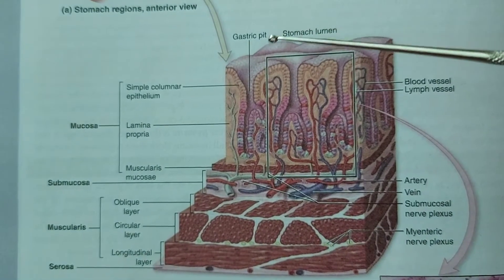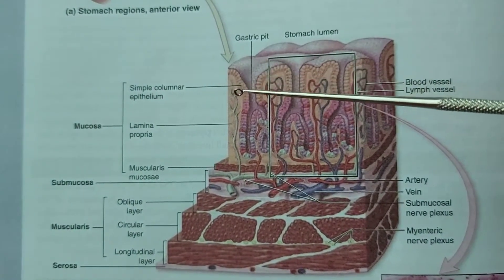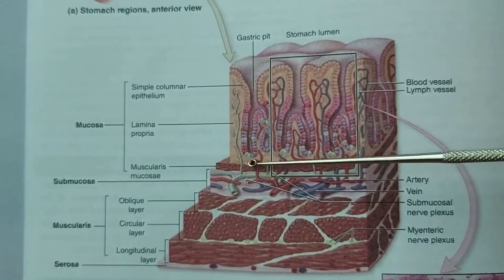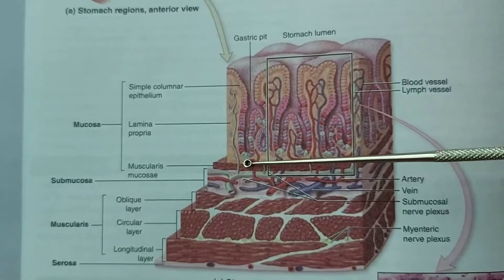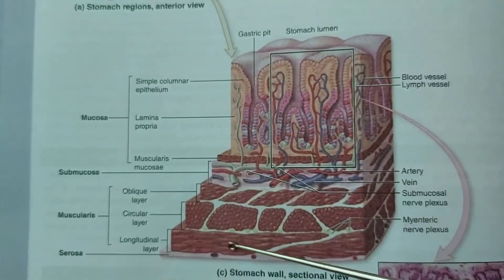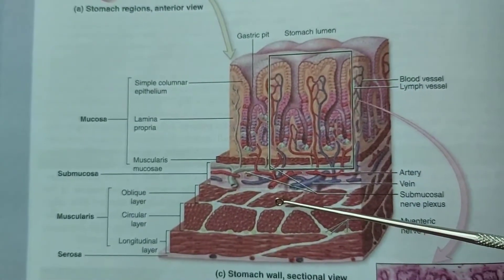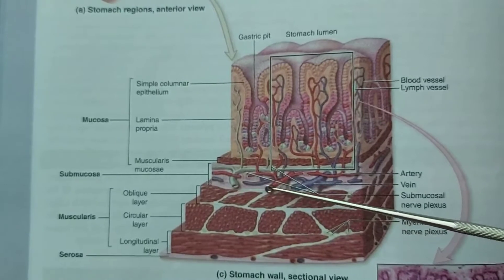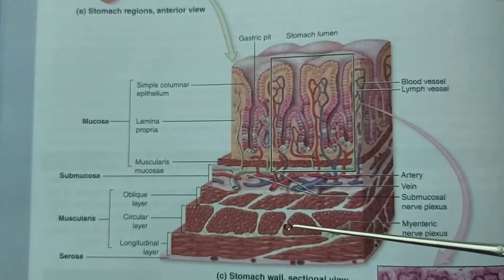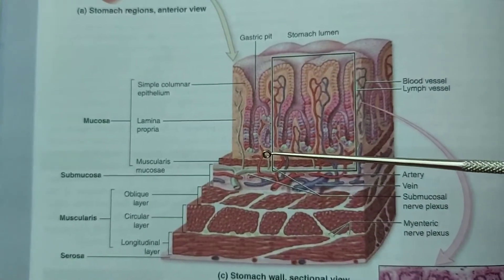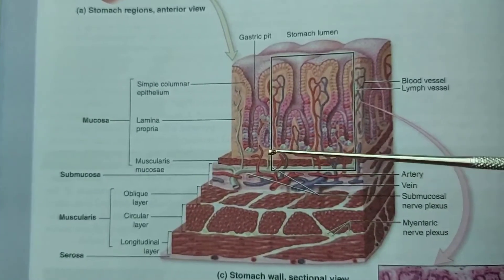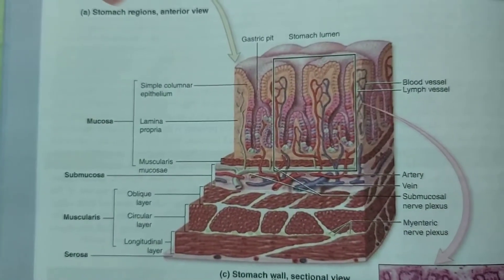So the mucous layer is jointly composed of the epithelium, lamina propria, and the muscularis mucosa layer. Do not confuse these two layers — the muscularis mucosa and the mucous layer itself.